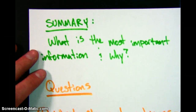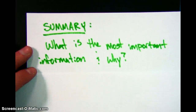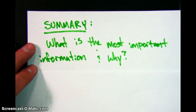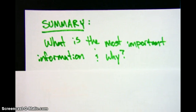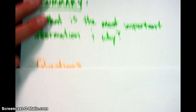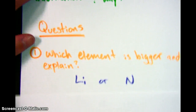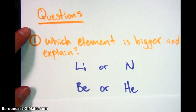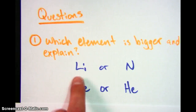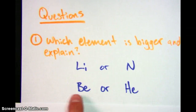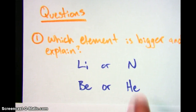What I need you to do going forward is a summary. Write on your paper: what is the most important information from this video, and why? Then the questions I need you to grapple with are these: Which of the following two elements is bigger? And explain how you know. The first comparison is lithium versus nitrogen, and the second question is beryllium versus helium.